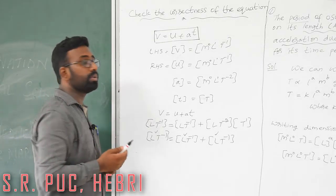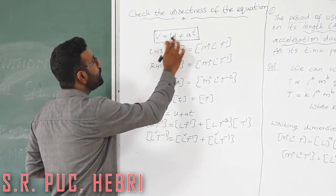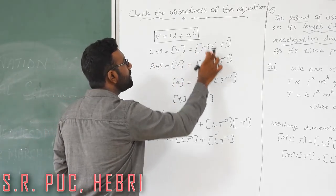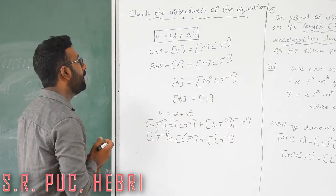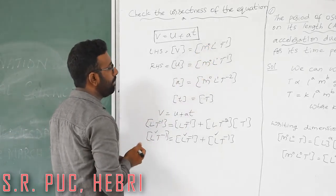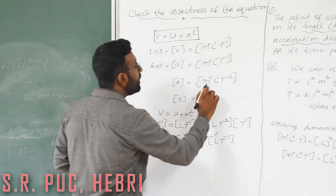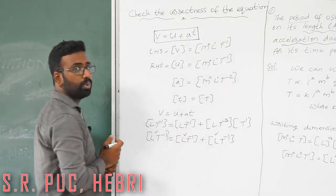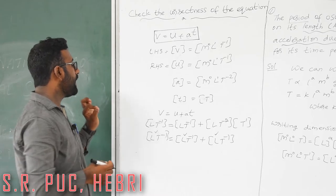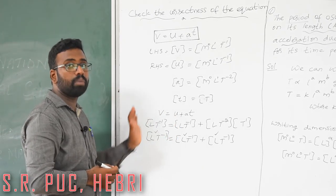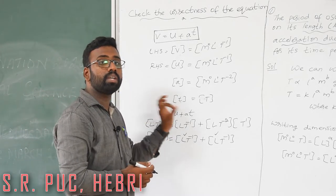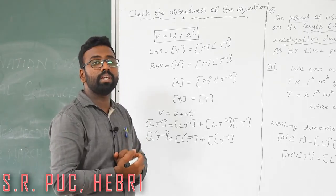We will check another familiar equation — the equation of motion v = u + at. The dimension of v (velocity) is M⁰ L T⁻¹. u is initial velocity, so the same dimension. Acceleration a is M⁰ L T⁻², and time t is T¹. We need to prove that all terms on both sides of the equation have the same dimension. If so, the equation is dimensionally perfect and homogeneity is satisfied.